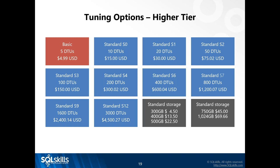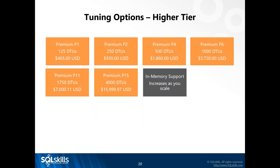You also can't run DBCC FREEPROCCACHE at the server level. However, there is ALTER DATABASE SCOPED CONFIGURATION CLEAR PROCEDURE CACHE, which frees the procedure cache per database. The DTU pricing is still valid for the most part, but there's been recent updates. Basic up to S12 gives you granularity. If you need to exceed the 250 GB initial limit for standard tier, you can get up to a terabyte. For premium tier, you can get up to a P15 at 4,000 DTUs, costing just under $16,000 a month.